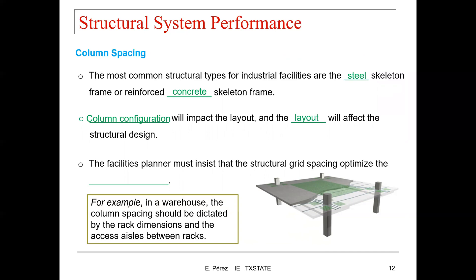When you start designing a facility layout, the building is still not built, so as you design the interior of the facility the building might be under construction. It is important to understand where those columns are located because they can have an impact on where you're placing a department or a machine. The facilities planner must insist that the structural grid spacing optimize the function of the facility. For example, in a warehouse, the column spacing should be dictated by the rack dimensions and the access aisles between the racks.